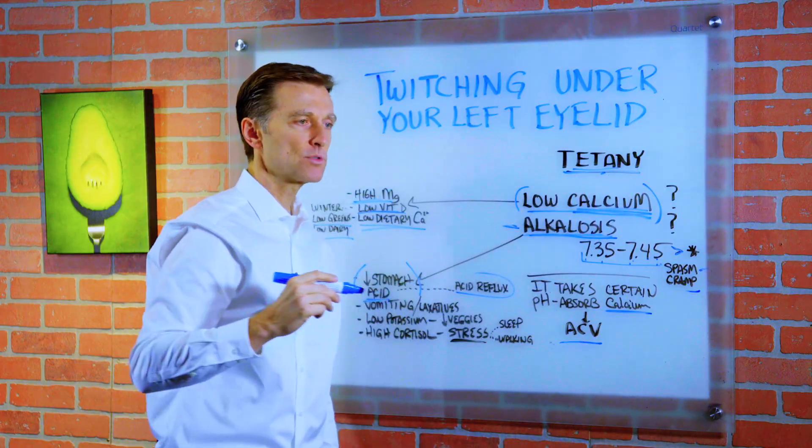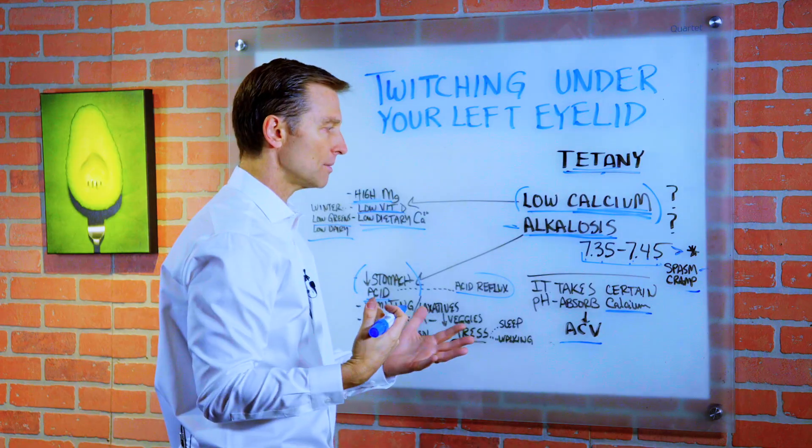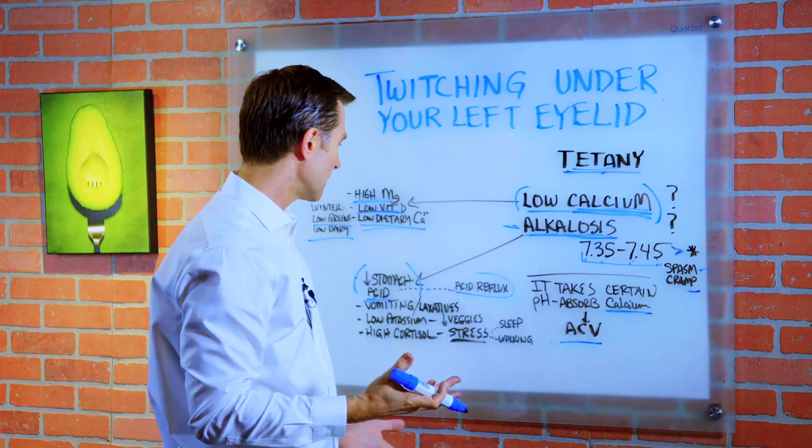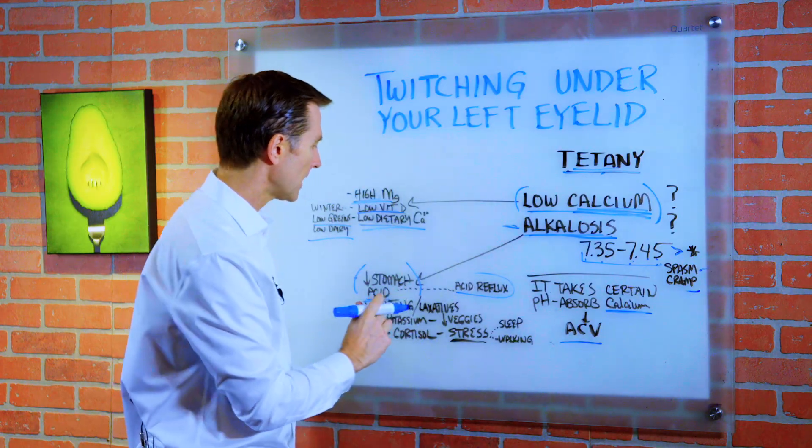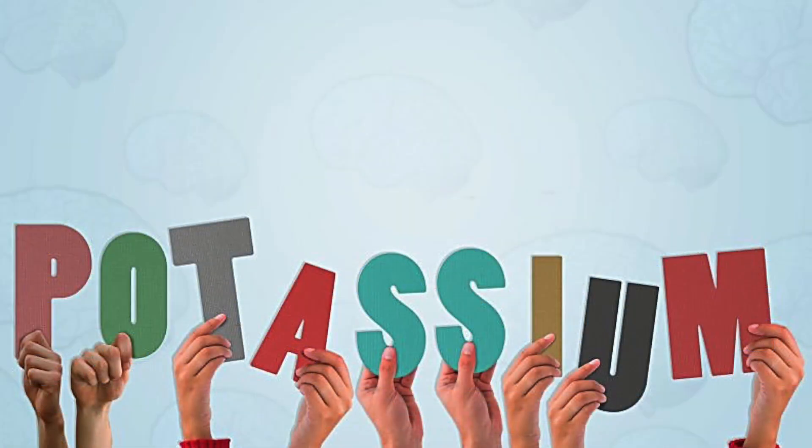And one of the things that can lead to is alkalosis and eventually tetany. What I'm trying to do is give you an understanding of what's behind certain things, so you don't just automatically take your apple cider vinegar, get rid of the tetany, and not really understand what's going on. Vomiting and laxatives can cause this as well.